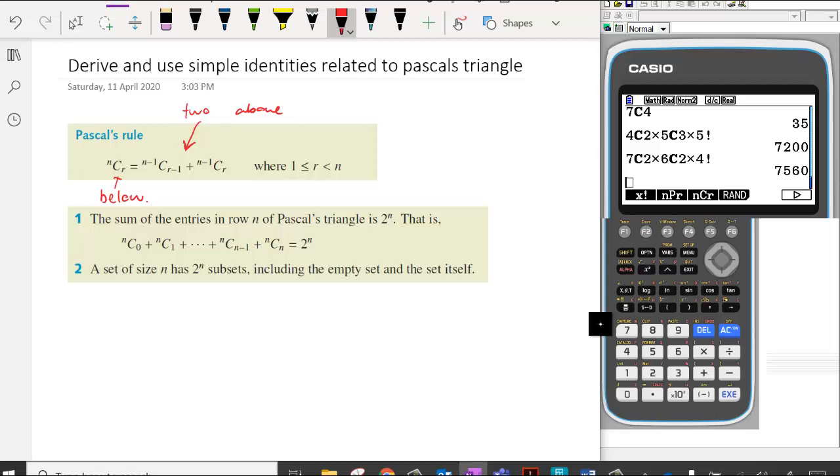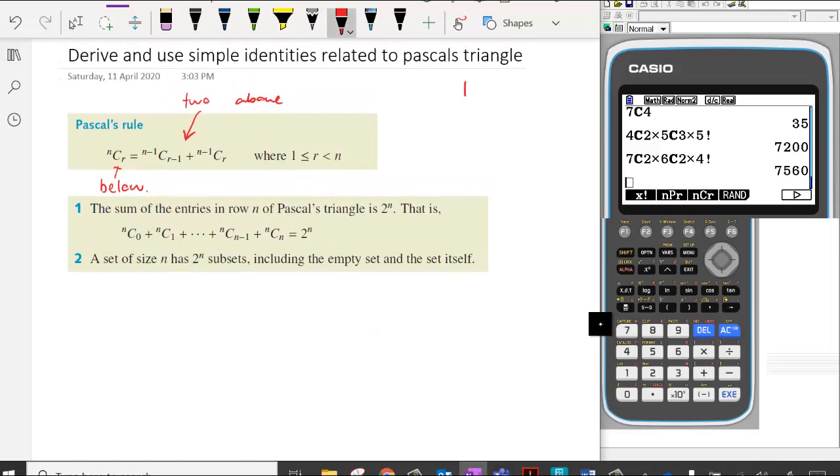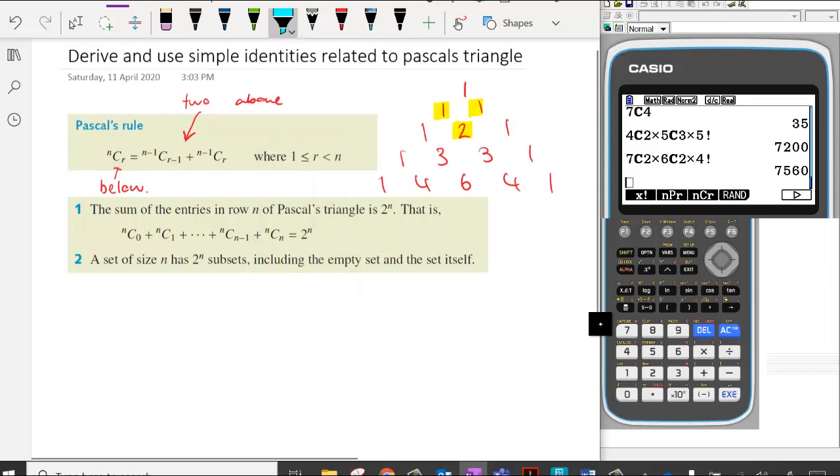If we look quickly at Pascal's Triangle, so we've got 1, 1, 1, 1, 2, 1, 1, 3, 3, 1, 1, 4, 6, 4, 1, where our whole idea is that each number below is the sum of the two above it. So we can look at another one. This 3 is equal to 1 plus 2 and this 4 is equal to 3 plus 1 and so on.